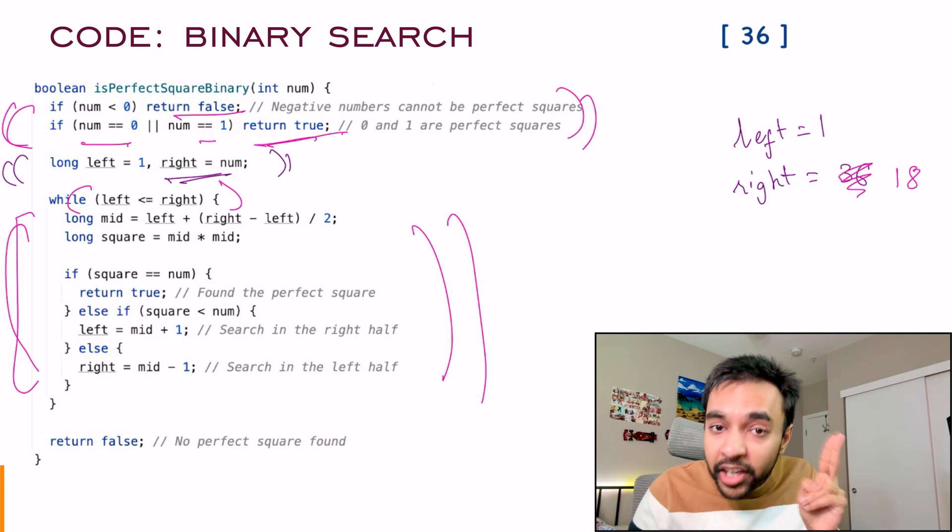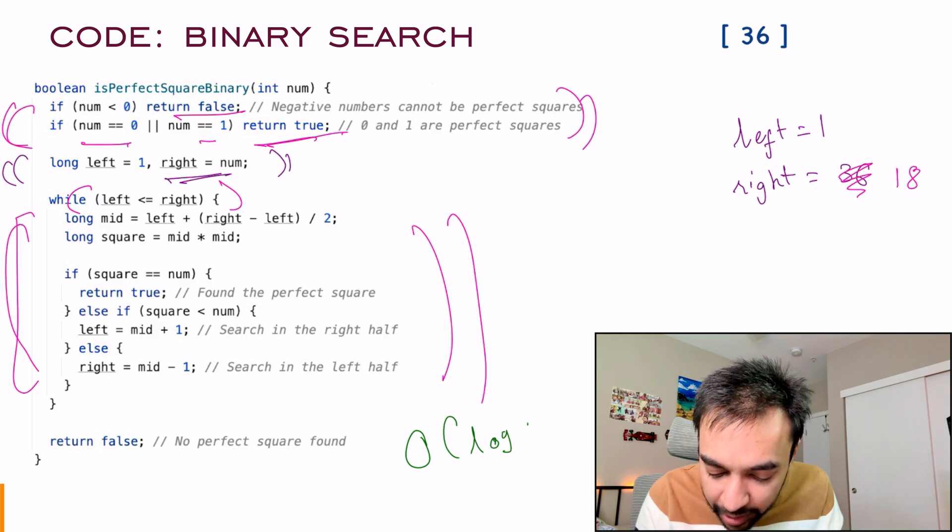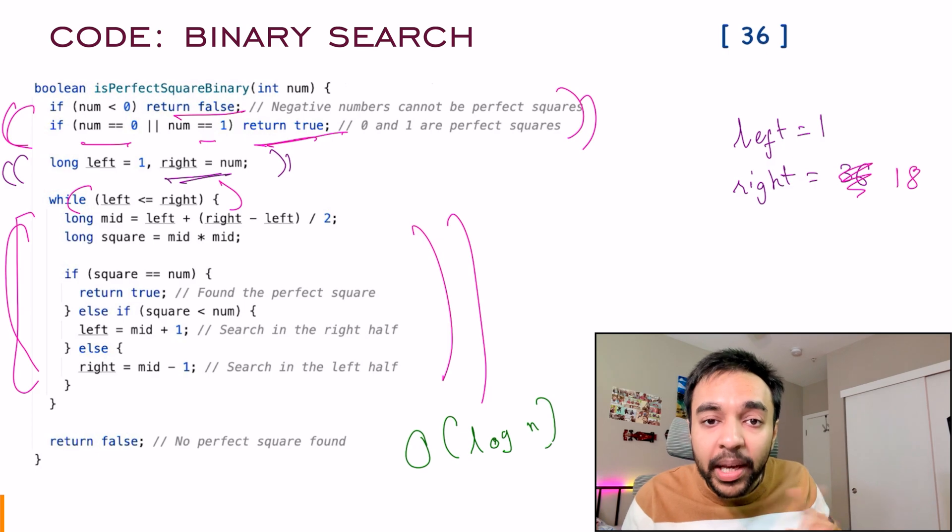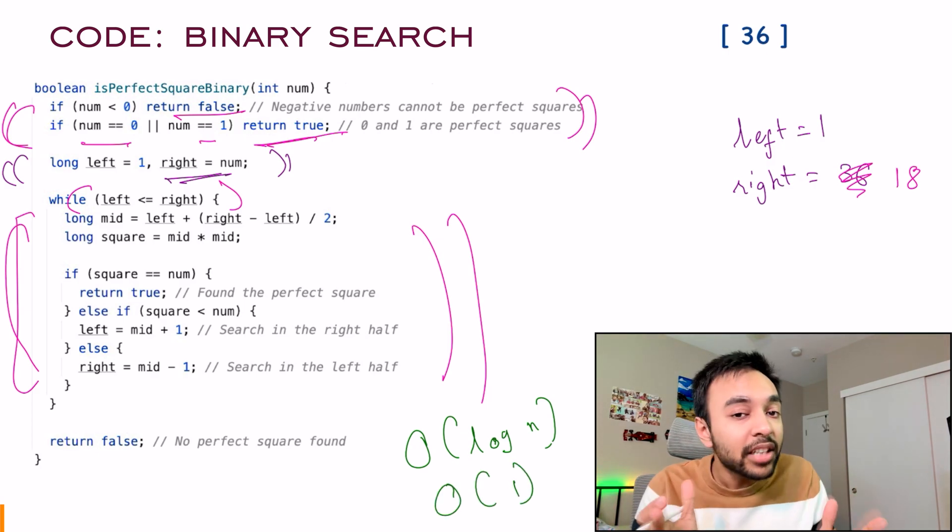So what did we just do? We were able to apply the binary search technique. And how much time does it take? It simply takes the order of log n time. And what is the space complexity? You are not taking up any extra space. So the space complexity is order of one. That means a constant space.